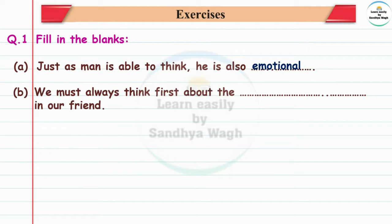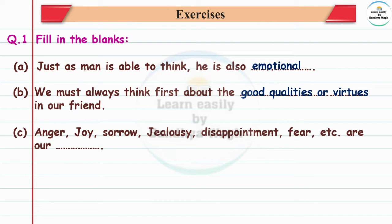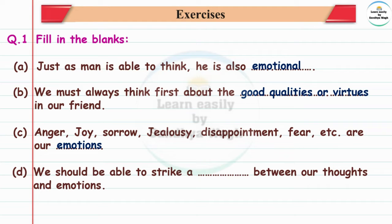Next blank: We must always think first about the — dash — in our friend. We must always think first about the good qualities or virtues in our friend. Good qualities means tsangle gund and virtues means sadachar. Anger, joy, sorrow, jealousy, disappointment, fear etc. are our emotions.